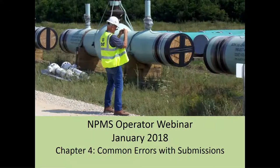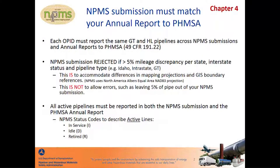Welcome to Chapter 4 of the NPMS Operator Webinar Series. In this chapter, we will review common submission errors. Remember, you must use the same OPID for each pipeline on the NPMS and annual report submittals. This means an accurate NPMS submittal will include the same pipeline mileage as an accurate annual report submission. As a quality control test, each submission to the NPMS is compared to the annual report for the same OPID. The NPMS submission is rejected if the mileage per state, interstate status, and commodity type — meaning gas transmission or hazardous liquid — does not match within 5%.